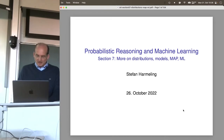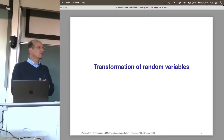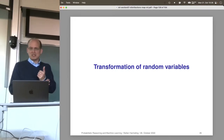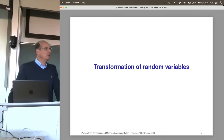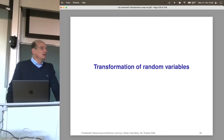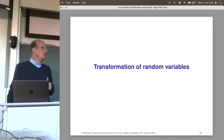Now let's look at transformation of random variables. Before this machine learning lecture, random variables might not have seemed important, but random variables are basically the data — the description of data in machine learning. Everything, whether pictures or a questionnaire, we model in the back of our heads as a random variable.